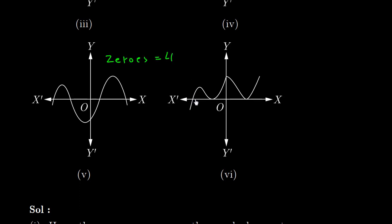Now, in this sixth question, the intersection points are three. We only need to look at the x-axis, not the y-axis. So in this one, zeros will be three.